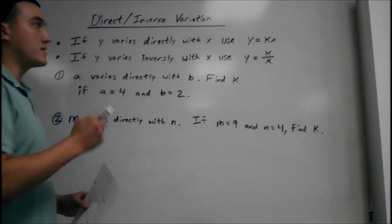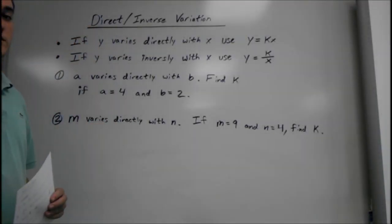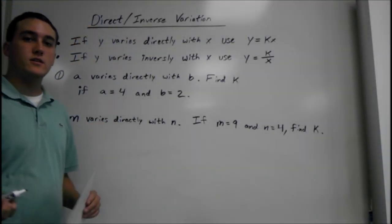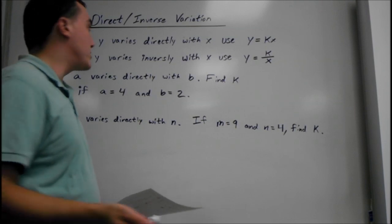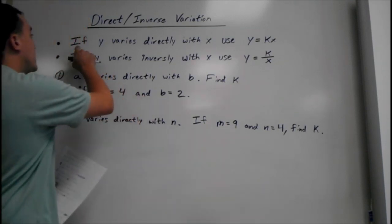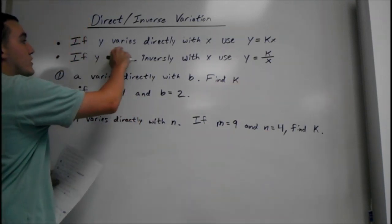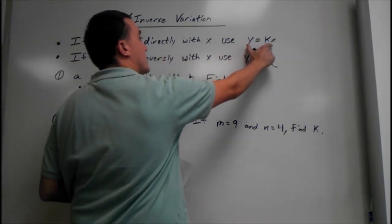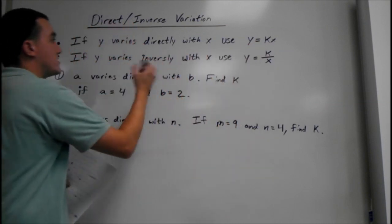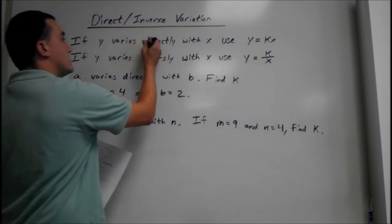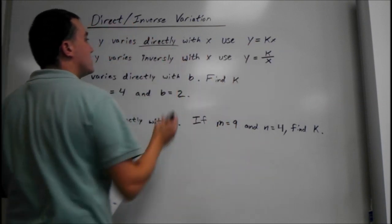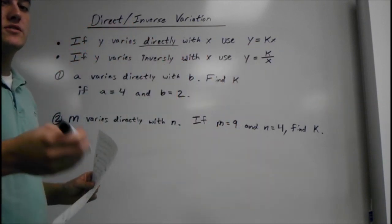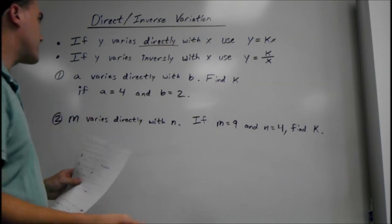Today's video is on direct and inverse variation. The first thing you need to know is what they mean. If y varies directly with x, we're going to use the equation y equals kx. So whenever it says directly, you need to multiply: y equals k times x.